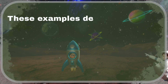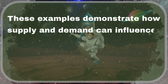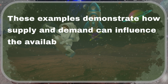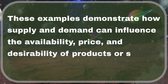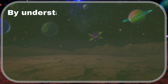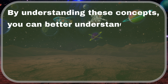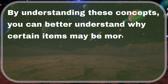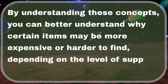These examples demonstrate how supply and demand can influence the availability, price, and desirability of products or services in everyday life. By understanding these concepts, you can better understand why certain items may be more expensive or harder to find depending on the level of supply and demand from consumers.